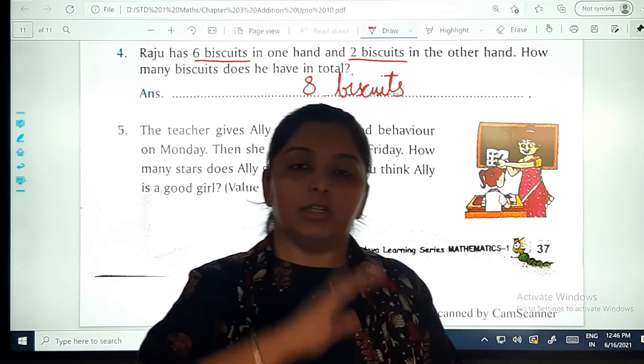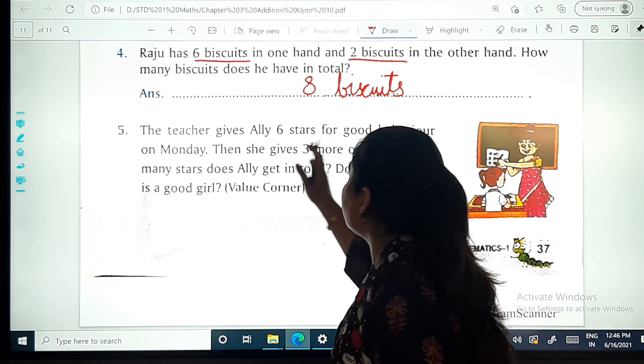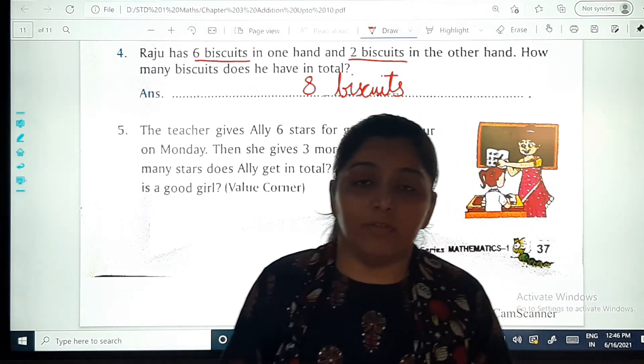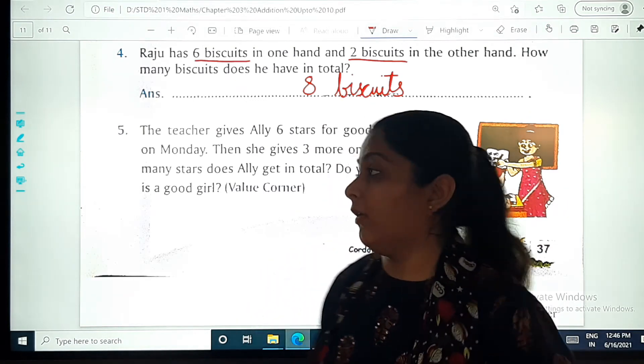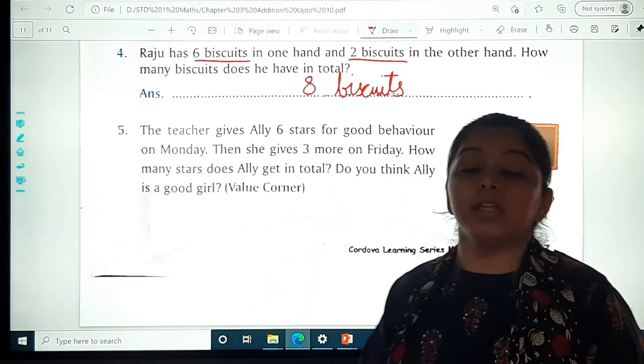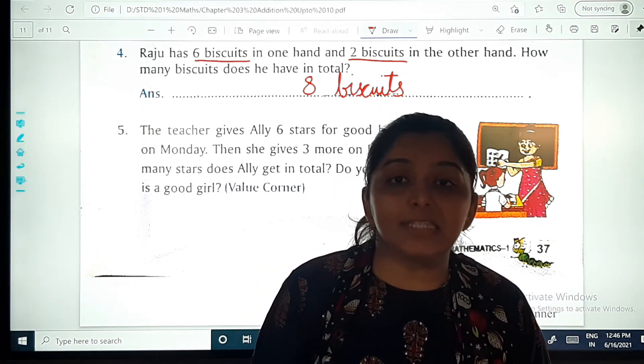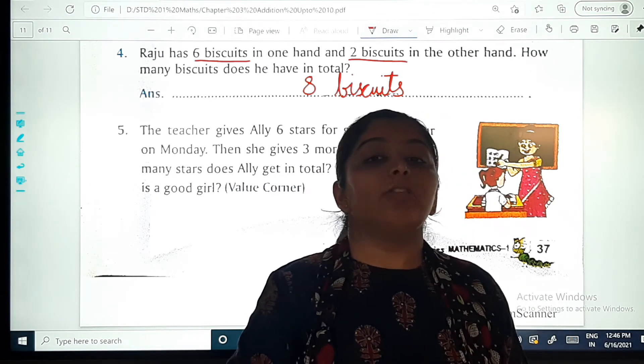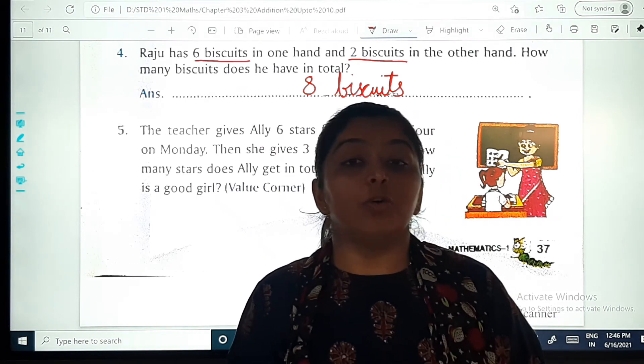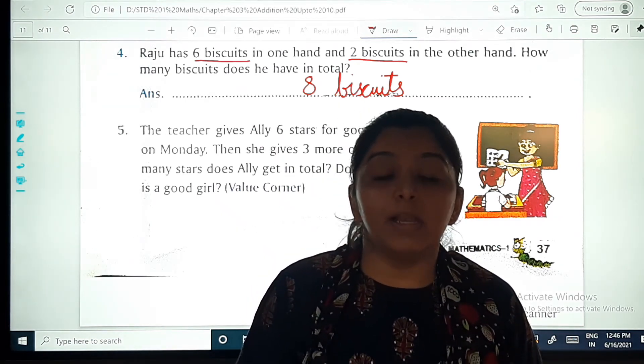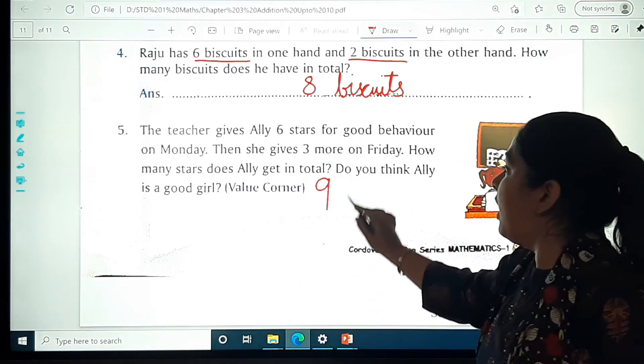Now, yeh humko sirf discussion karna hai. Abhi Monday ko Ali ko six stars mile thay good behavior ke liye. Phir usko Friday ko three stars mile. Yes. Toh total Ali ko kitne stars mile? Batao ma'am ko. Six plus three is six as a base and three on your fingers. That is seven, eight and nine. Toh Ali ko kitne total stars mile? Nine stars mile. Yeah. Usko kitne stars mile? Nine stars.